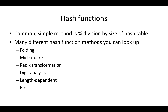The common simple hash function method is modular division of the key by the size of the hash table. You might ask: but what if our keys are strings? In that case, you perform manipulations on the string — for example, take the middle three characters, convert them to ASCII values, and hash the sum of those ASCII codes. As long as you pick a method and apply it consistently, it will work. There are many methods for creating hash functions: folding, mid-square, radix transformation, and others. For the most part, we'll focus on modular division by the table size, preferably a prime number.